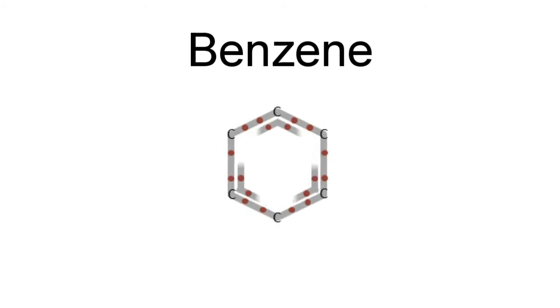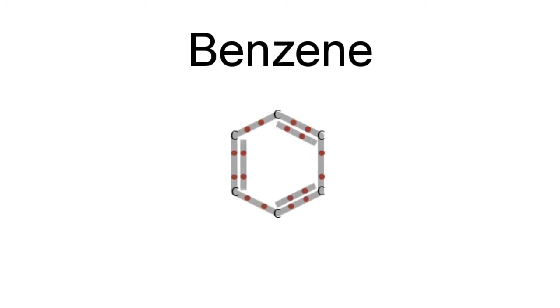The electrons that are rotating around the molecule, which are called delocalized electrons, are moving incredibly quickly. So quick, in fact, that it's more like they are creating one and a half bonds, instead of alternating single and double bonds.